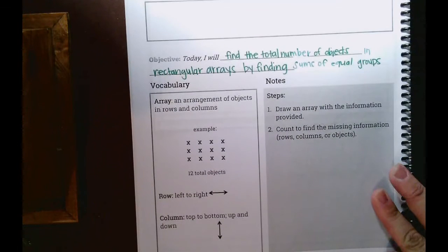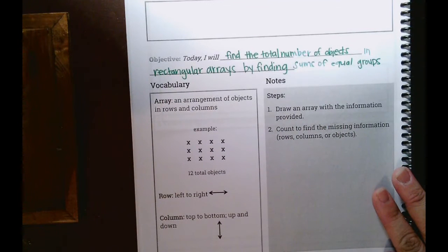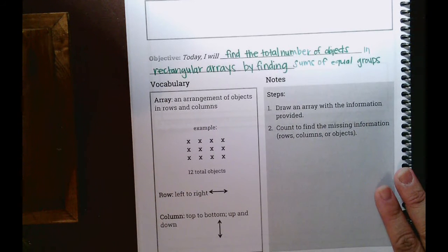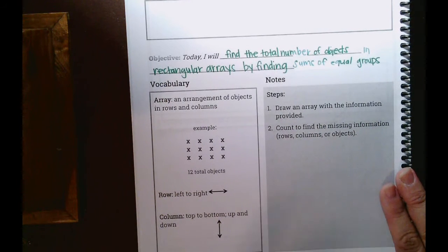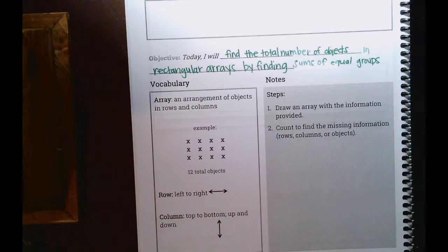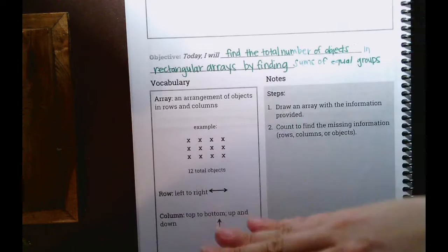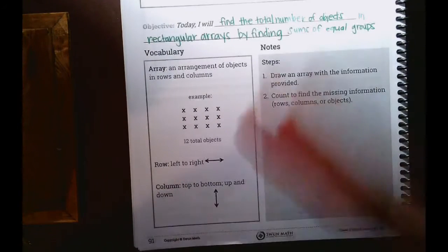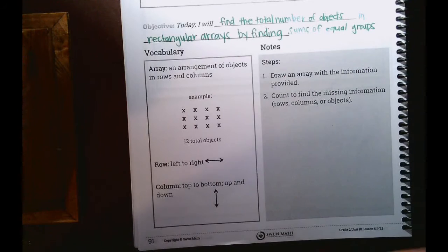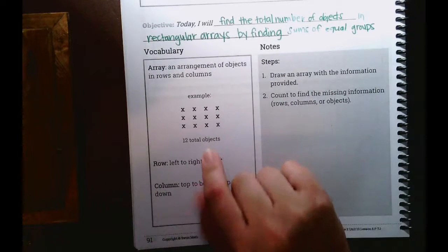Okay, so our objective today is I will find the total number of objects in rectangular arrays by finding sums of equal groups. It's essentially just what multiplication is, finding the total amount of objects by setting up your items in rows and columns, organizing them in rows and columns to get that sum, to get that total amount.